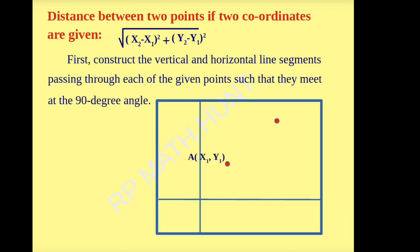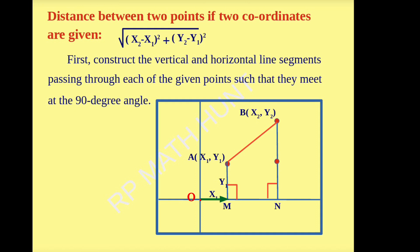Let A be (x1, y1) and B be (x2, y2). Now join AB. We have to find the distance AB. A perpendicular is drawn from B to the x-axis; it meets at N. Another perpendicular is drawn from point A to the x-axis; it intersects the x-axis at M. Origin to M is x1, M to A is y1, O to N is x2, and N to B is y2. Now MN is the difference x2 − x1.